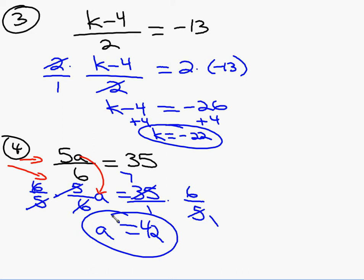So all you have to do, the key to this problem, is rewriting it. Rewrite five a over six as five-sixths a. That's the key to this problem.